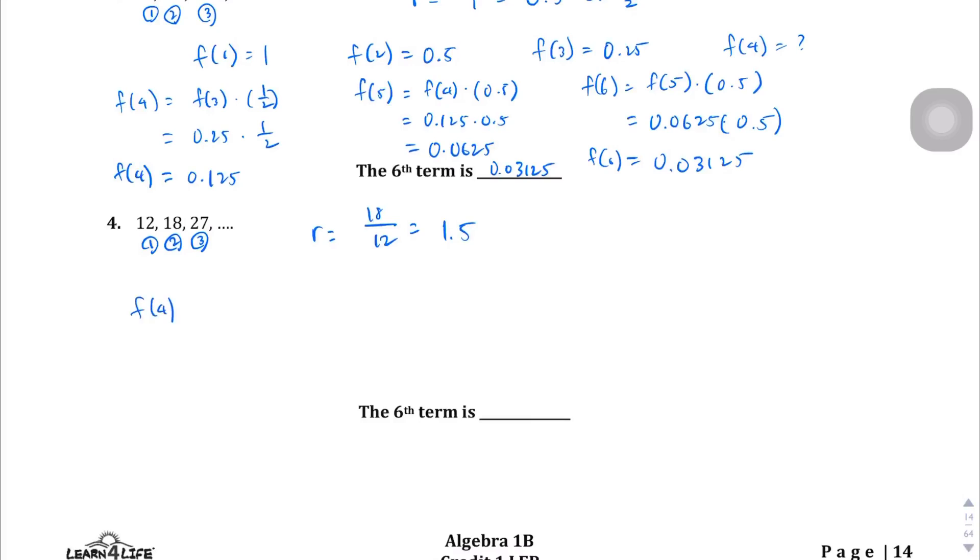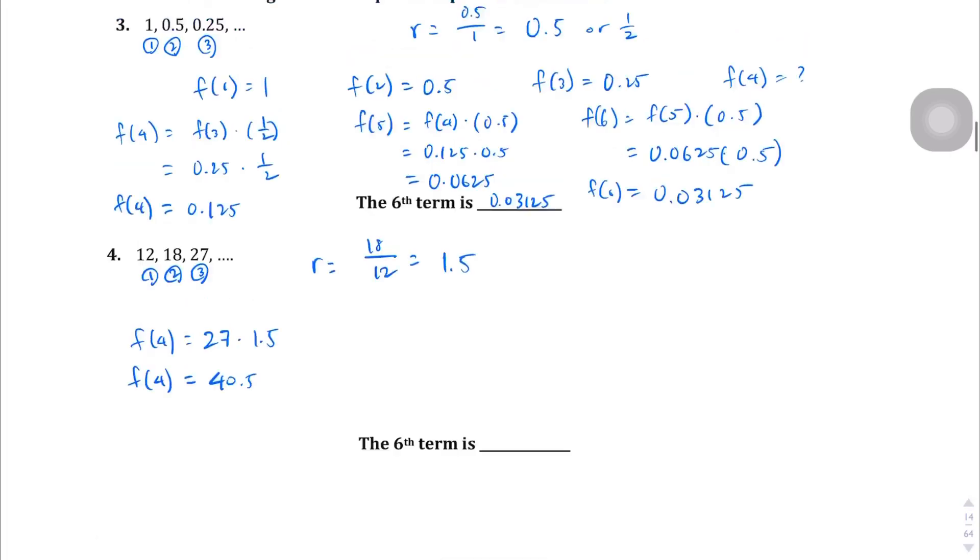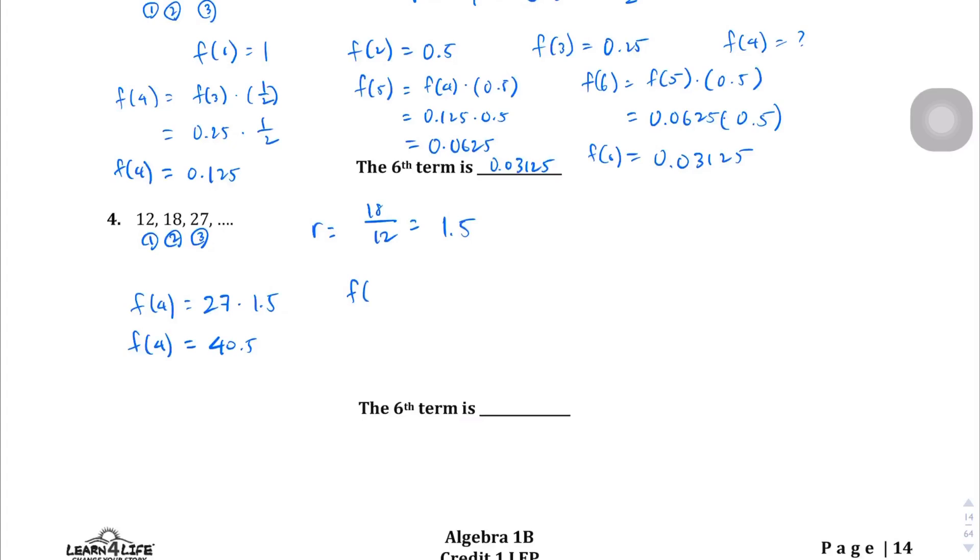So we're given three terms. We want to find the fourth term. And that's going to be the third term, which is 27, not 37, 27 times the common ratio. And you should get 40.5 to be the fourth term. And notice I'm simplifying the steps here. But if you want to continue on using these steps, feel free to do that. f of 5 is going to be f of 4 times 1.5. We found f of 4 was 40.5. So we're going to multiply that by 1.5 to get 60.75. And then f of 6 is going to be f of 5 times 1.5, which is 60.75 times 1.5, which gives me 91.125.